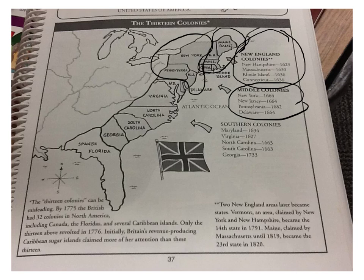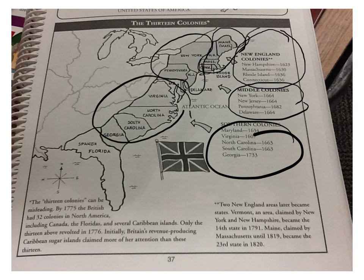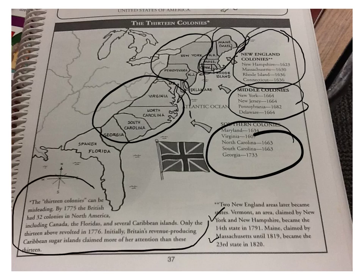And then we've got the southern colonies of Maryland, Virginia, North Carolina, South Carolina, and Georgia. So these three regions are going to become very important to us. Notice that Maine was part of Massachusetts and the area we now call Vermont was once part of New York and New Hampshire. Keep in mind that these are not the only British colonies ever in the whole wide world — they're just the ones we are going to talk about.